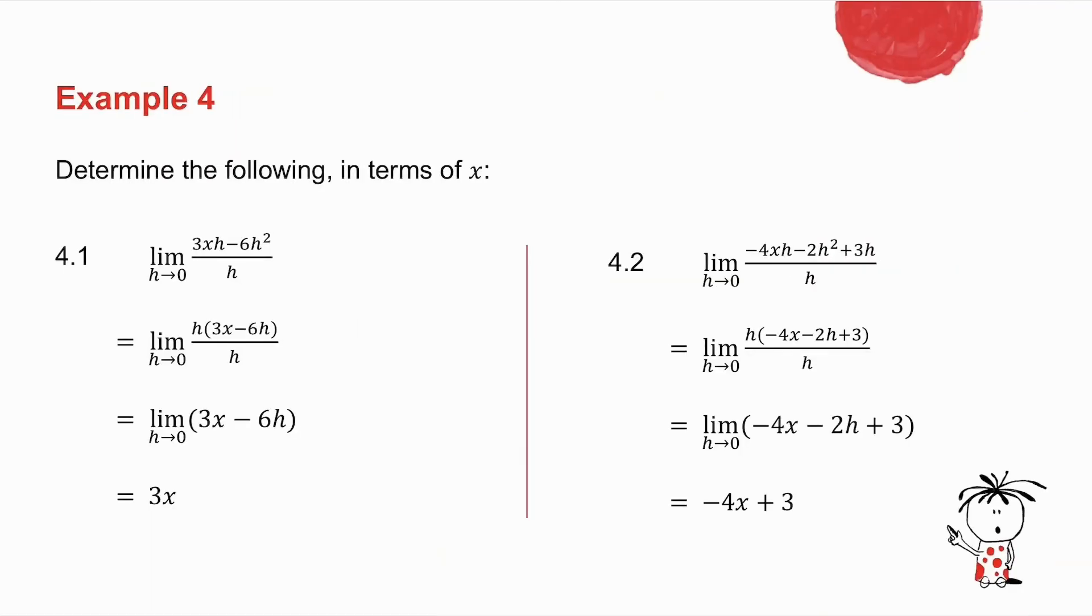4.1, common factor of h, which cancels with the h at the bottom. As h gets closer to 0, my answer is 3x. 4.2, common factor of h, which cancels with the h at the bottom. As h gets closer to 0, my answer is minus 4x plus 3.